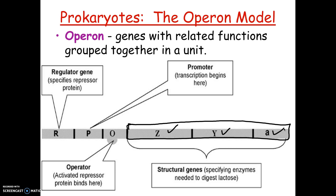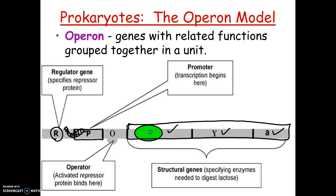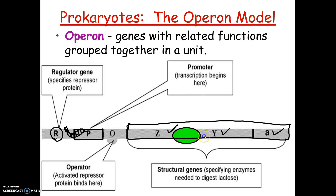We're going to walk through each part of this operon. There's usually a gap between the regulator gene and the other parts. The first part is the promoter — this is where RNA polymerase binds for transcription. Polymerase travels down the operon and makes mRNA, which then makes the needed enzymes — in this case, to digest lactose. As long as nothing is in the way, this operon is constantly in the on position.